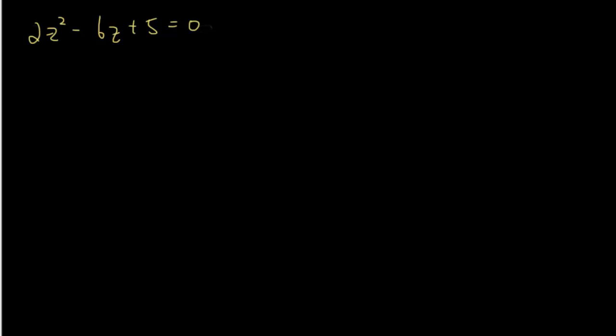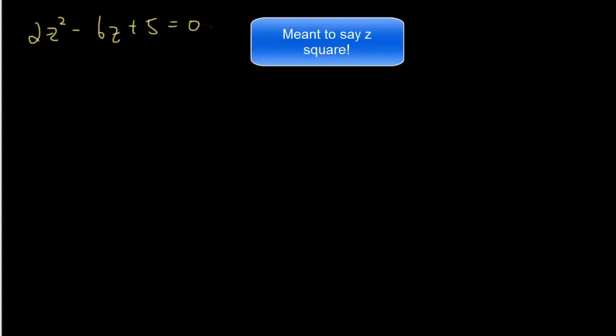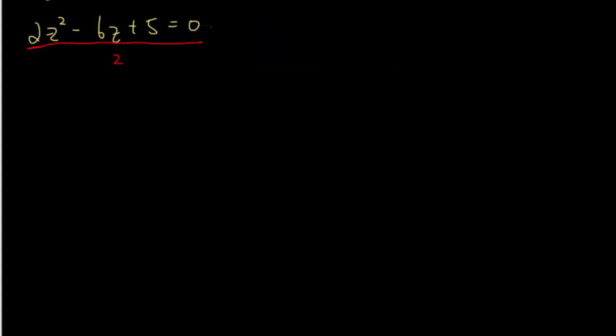Now again, whenever I'm using the complete the square method, I have to drop away the coefficient in front of the x square, which is this one. And by doing that, I need to divide everything by 2. So that will be z square minus 3z plus 5 over 2 equals 0.